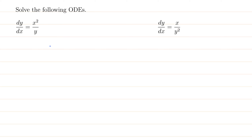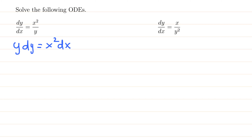Solve the following ODEs. In part A we have dy/dx equals x squared over y. Let's separate the variables — basically cross multiplying in differential form gives us y dy equals x squared dx. Now we integrate both sides.